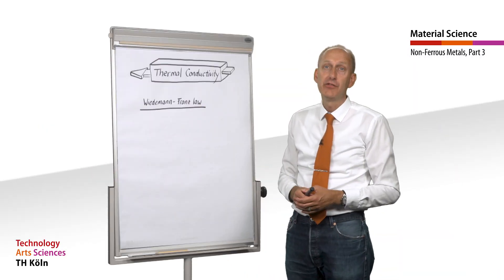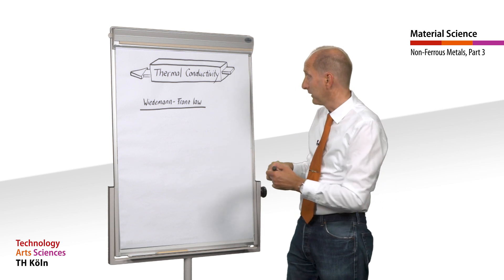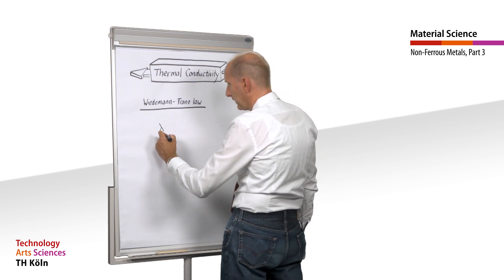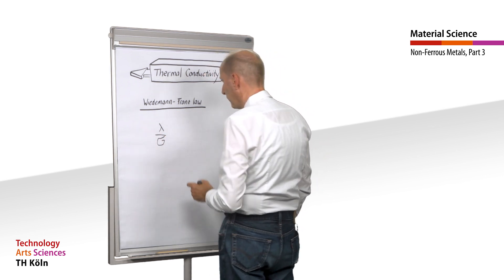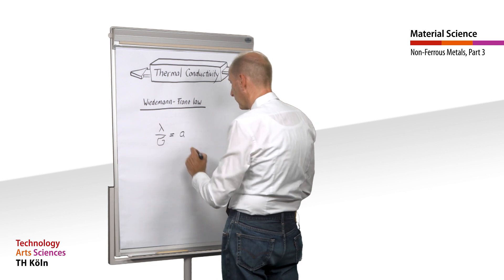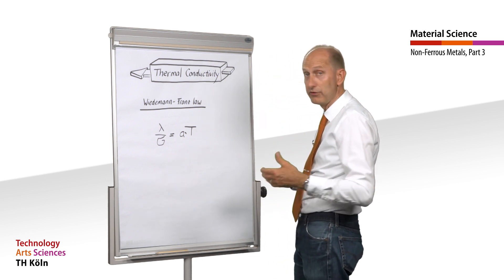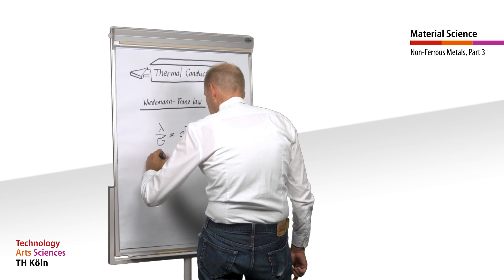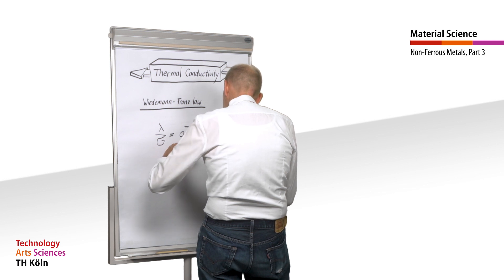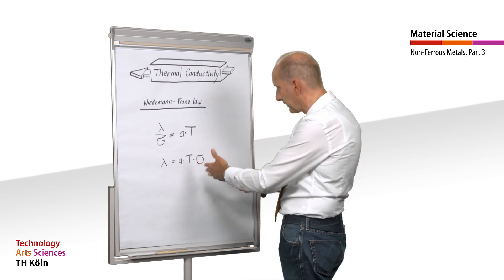According to the Wiedemann-Franz law, electrical conductivity and thermal conductivity are directly proportional to each other. The law states: λ (thermal conductivity) divided by σ (specific electrical conductivity) equals A (a constant) times T (temperature). This can also be written as λ = A × T × σ, from which we can see that the two are directly proportional.